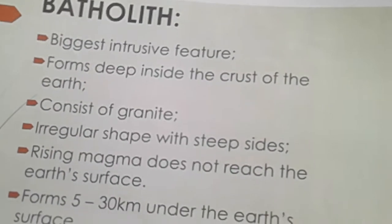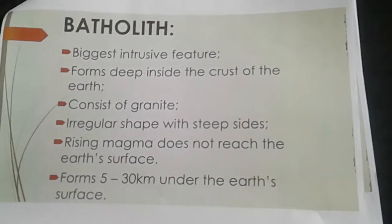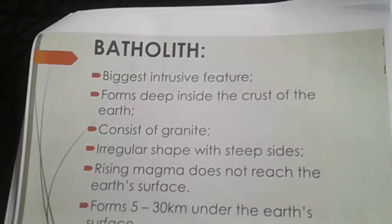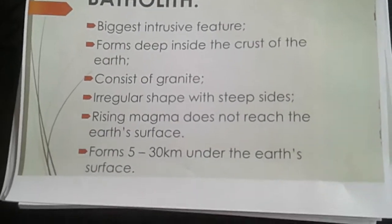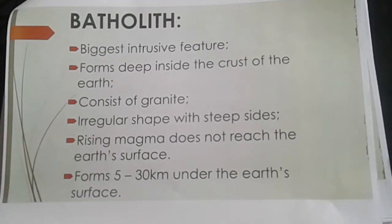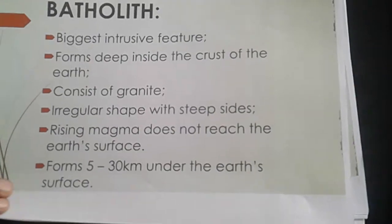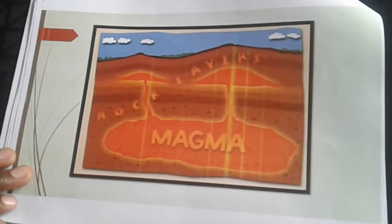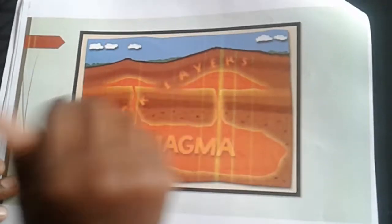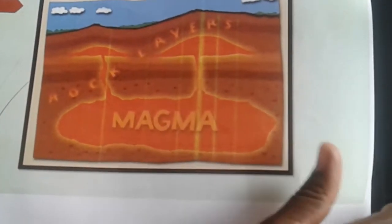The batholith is the biggest of them all. The type of rock it mainly forms is granite, and it is formed inside the earth's crust. When it reaches the surface it becomes what we call granite domes. This is the largest of all the intrusive landforms. When still under the surface it looks like that large feature, and when exposed to the surface it becomes a dome.